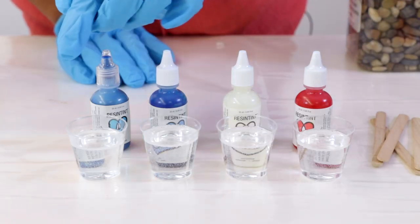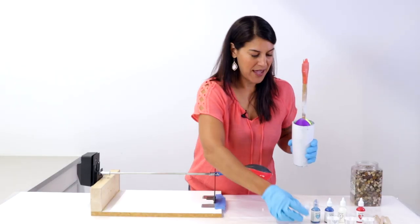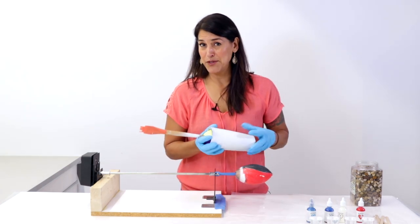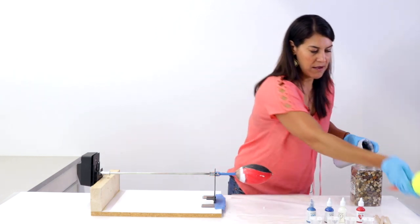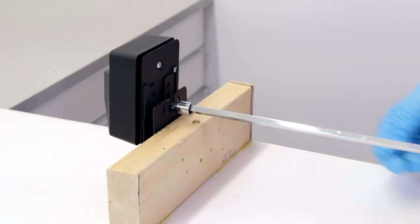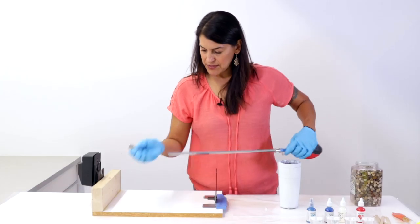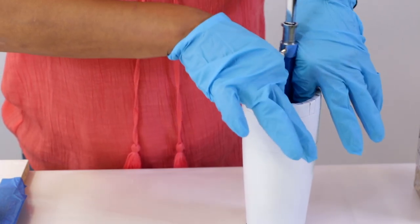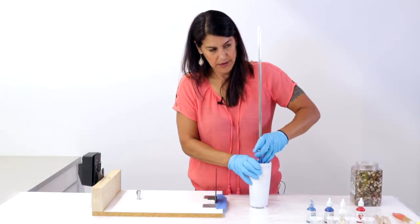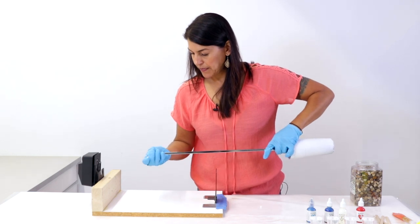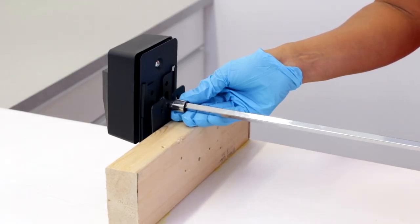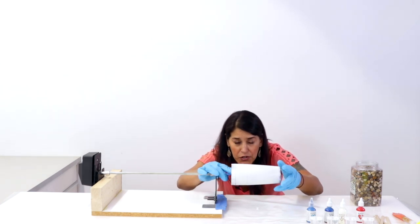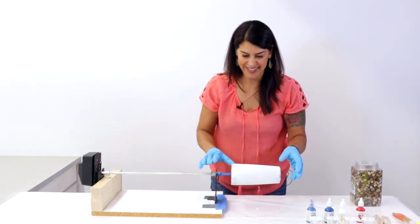This one is all dry. I did this yesterday. It's all dry, ready to go. I've got my ArtResin already measured and mixed and pre-portioned in these little cups, and I've got my resin tint here ready to go. I'm gonna do a red, white, and blue kind of ombre design on this tumbler today. I'll insert the tumbler onto our device and make sure it's level.